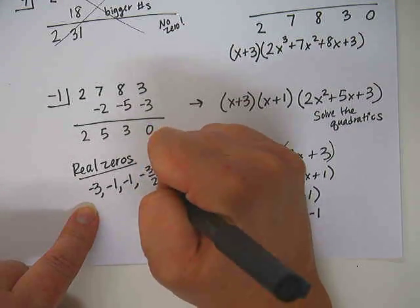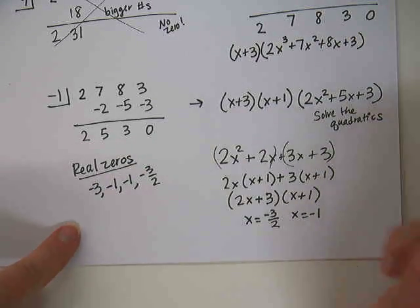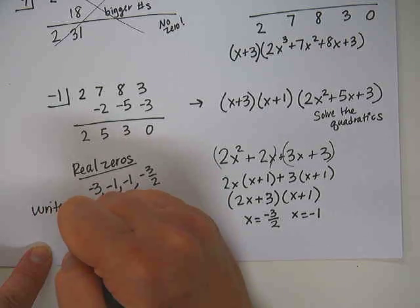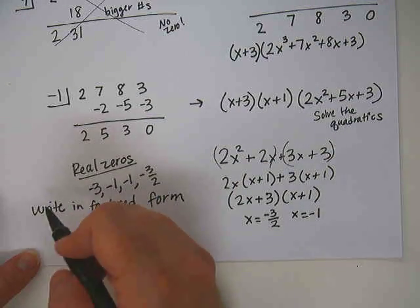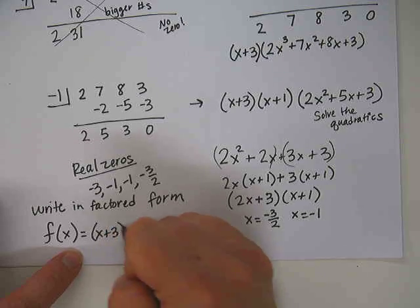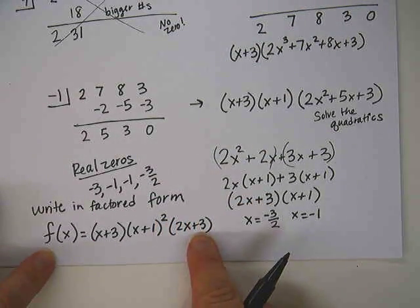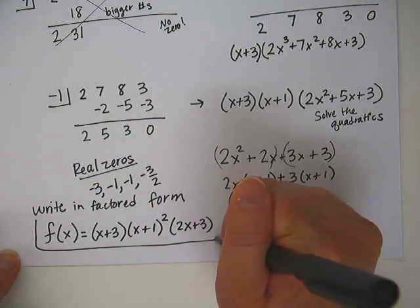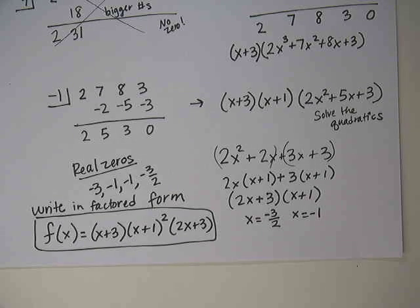So what we're doing here is finding the real zeros. We have found them and there's four of them. There's negative 3, there's negative 1 twice. You don't need to write it twice. You can just say it has a multiplicity of 2 if you need the multiplicity. And we have negative 3 halves, which we could have found using synthetic division. Synthetic division with fractions isn't as bad as you might think. Sometimes it is. Now it's always nice to write your function in factored form. So write the entire function back down again, but this time write it in factored form instead of in general form. So our function f(x) will be (x + 3)(x + 1)^2(2x + 3). And it does not matter what order you write the factors in, they can go in any order as long as they are all there.